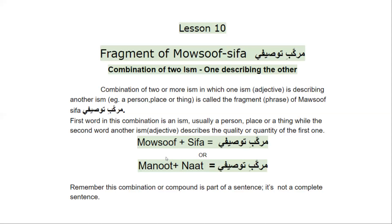The same fragment is also called — the same two ism, masuf and sifa — can also be termed as man'ut and na'at. Na'at is something that describes the quality of another ism. So this murakkab-e-taasifi can also be described as the combination of man'ut and na'at.